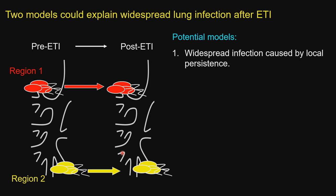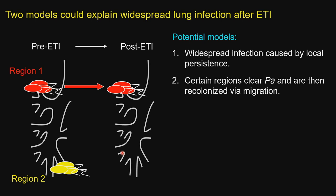This initially suggested our hypothesis may have been incorrect. However, we realized there are actually two different models that could explain widespread infection after ETI. In the first model, widespread infection may be caused by local persistence of all subpopulations — meaning the Pseudomonas that existed in each region before ETI persisted there. In the second model, certain regions could persist and then migrate to colonize other regions that cleared after ETI. Finding this second model would suggest the locally persistent regions are the sites we need to focus on.